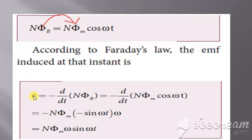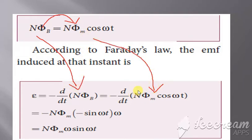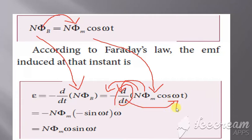To get the value of EMF e, it equals minus d/dt of N·phi_b. Instead of N·phi_b, we write it as N·phi_m times cos(theta). Bringing N and phi_m outside, we get d/dt of cos(omega t). The differentiation gives us omega times minus sin(omega t).